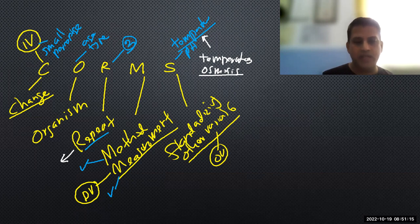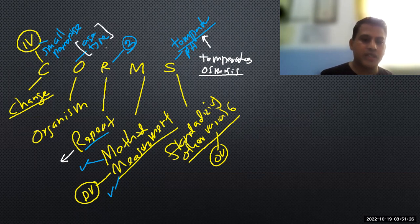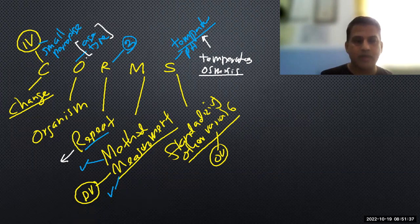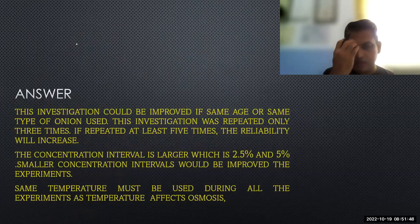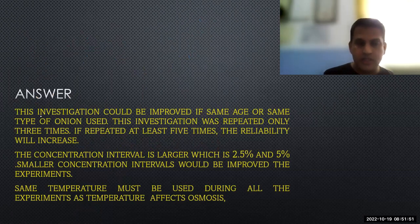If you look at the other one, the experiment can be repeated more than three times, which increases the reliability. Age and the type of the onions: same age, same type of onion should be used, because if not controlled it affects the dependent variable. Smaller percentages can be used because small percentage intervals can increase the reliability of the experiment.